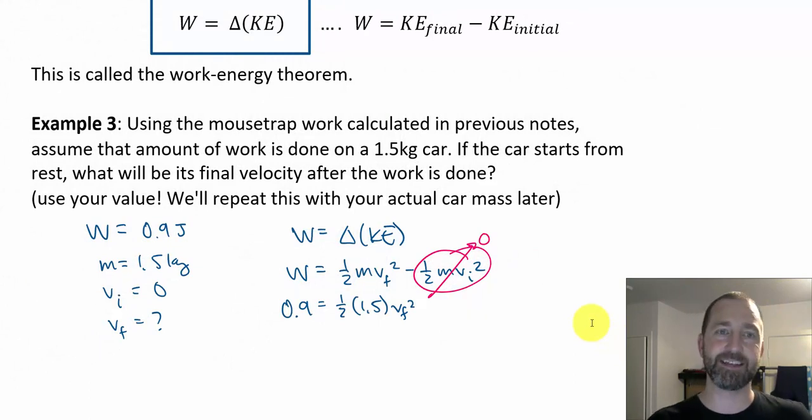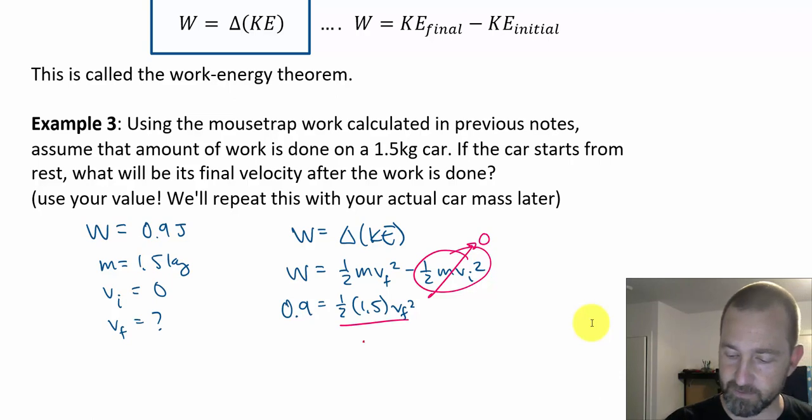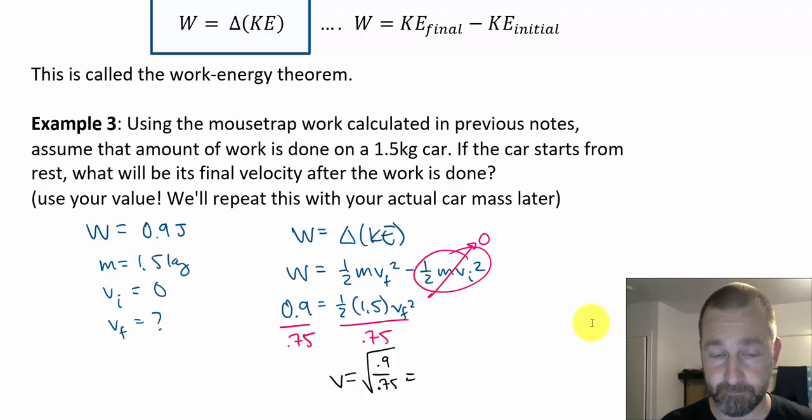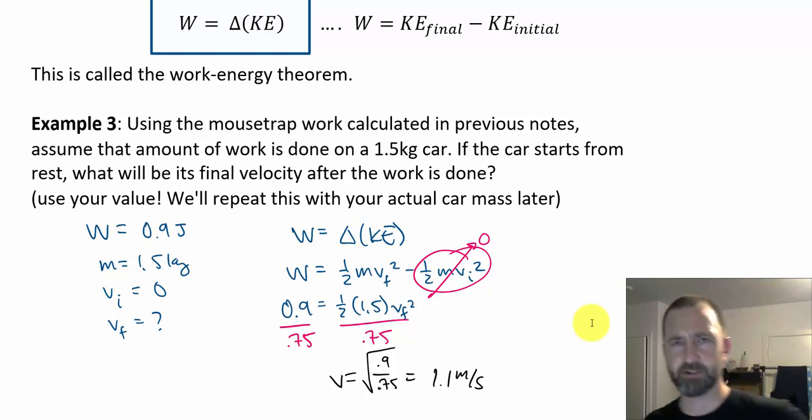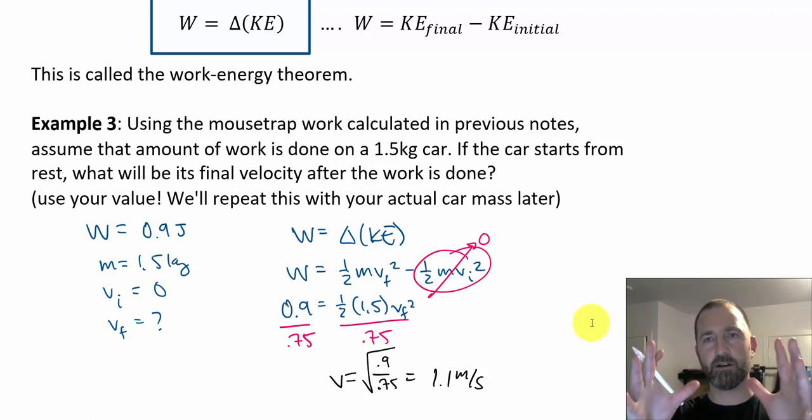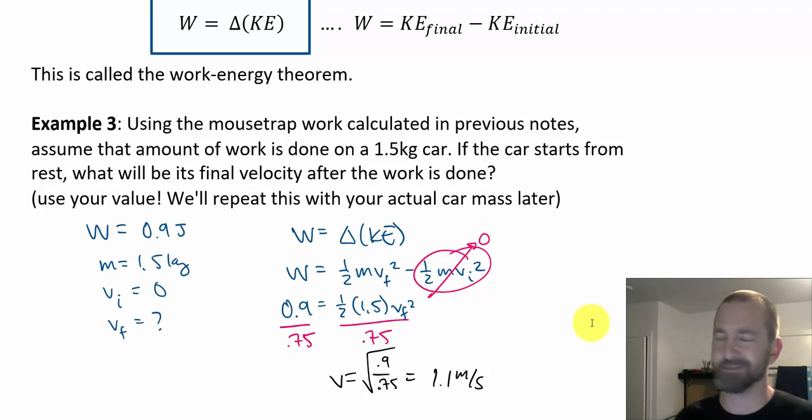Once I get those values plugged in, it's the same thing as the previous example problem. We can solve for the final velocity. One half times 1.5 is 0.75, divide both sides by it, then eventually square root. We should have velocity equal to 0.9 over 0.75 square rooted. On my calculator, I get 1.095, or about 1.1 meters per second. So nothing crazy fast, but 1.1 meters per second, that's a pretty brisk walk. You can imagine a little car about 1.5 kilograms traveling at a brisk walking pace, all because a mousetrap pushed on it. That's not too bad.